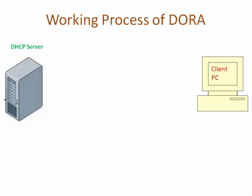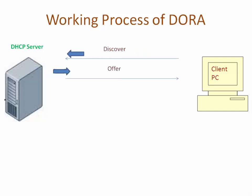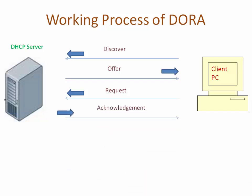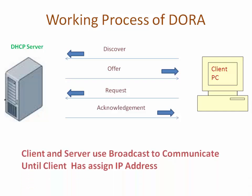In the DORA working process, on one side is the DHCP server and on the other side is the client. When a client PC connects to the network, it generates a Discover message to the DHCP server. The DHCP server then offers an IP address, asking whether the client wants to take it. The client sends a Request message asking the server to allocate that IP address. Finally, the DHCP server replies with an Acknowledgement message confirming the IP address has been assigned to the client. Client and server use broadcast to communicate until the client has been assigned the IP address.